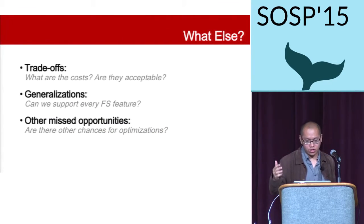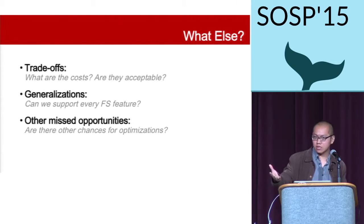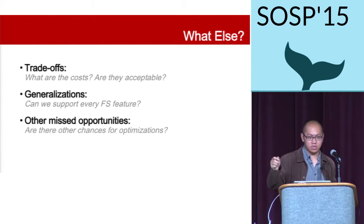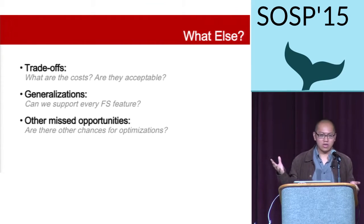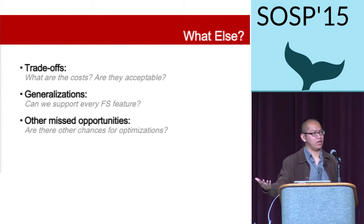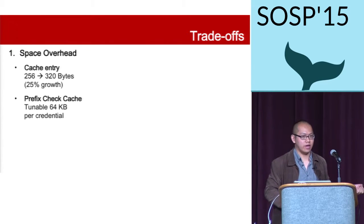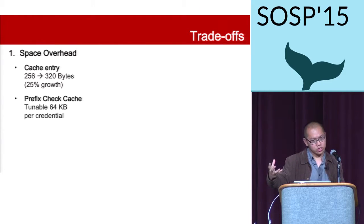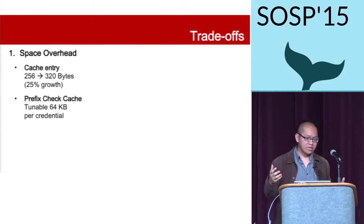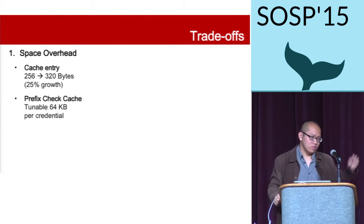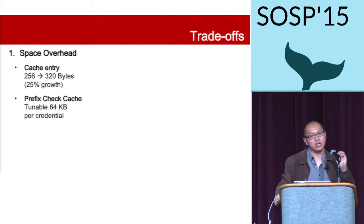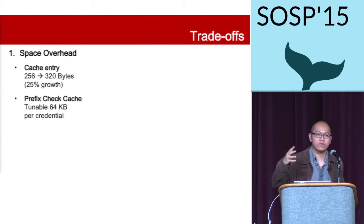Now let's consider the trade-offs. First, there's a space overhead: we extend each directory cache entry to save a signature, and we allocate a prefix check cache per credentials. In our setup this is 64 kilobytes, but it's a tunable size for different applications. Second, there's an overhead on renaming and changing directory permissions — that is, updating the directory cache.